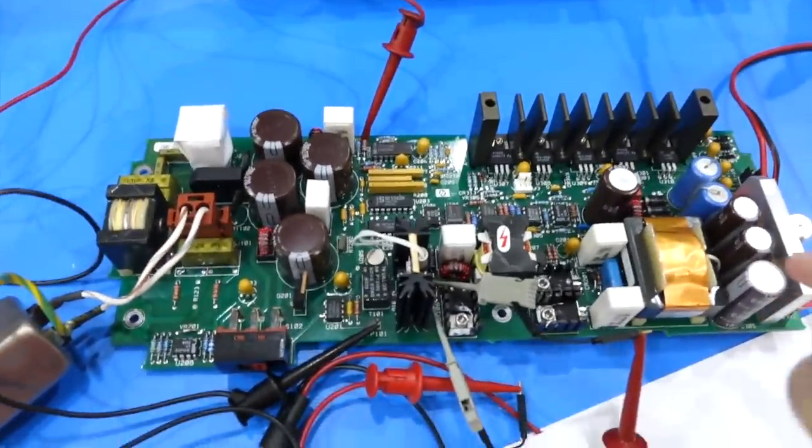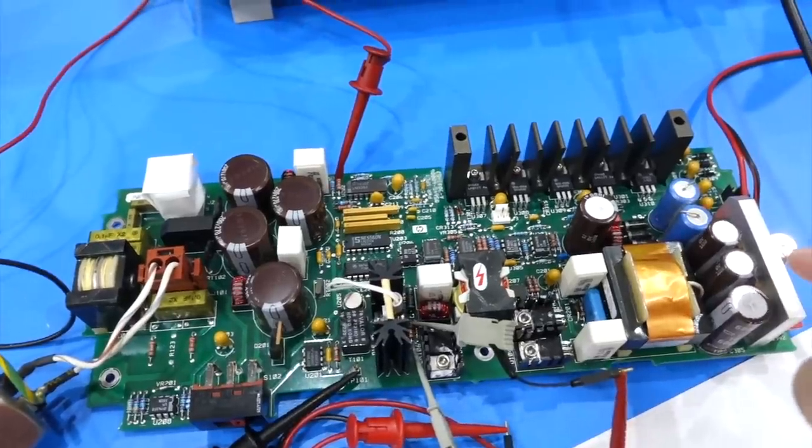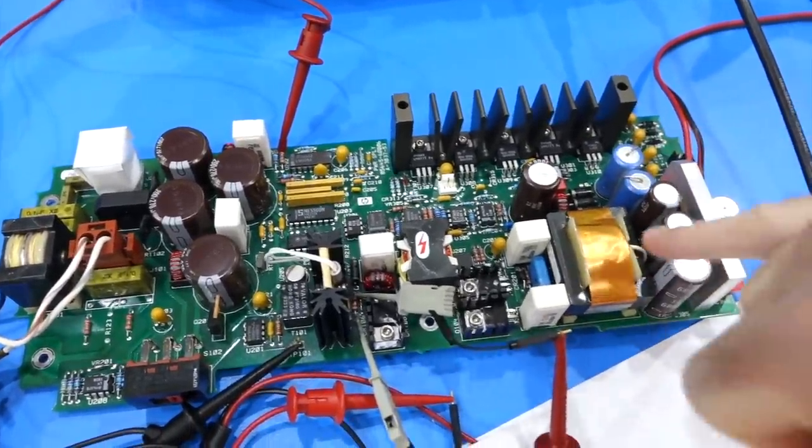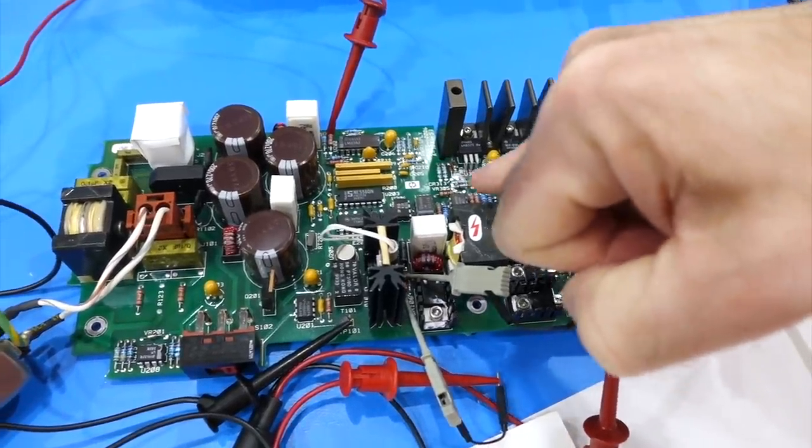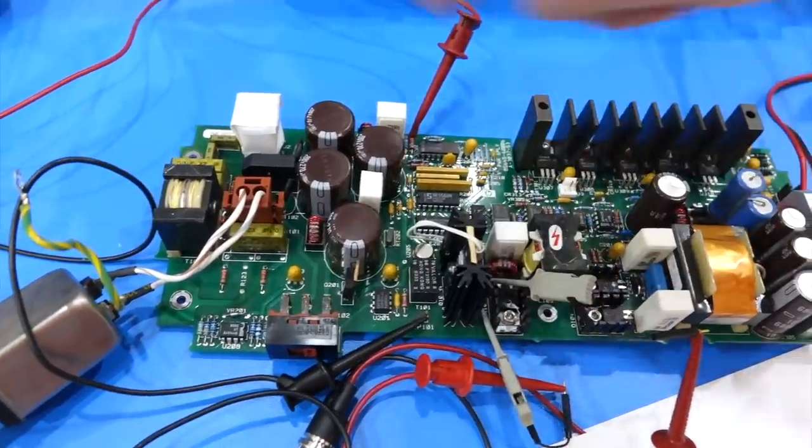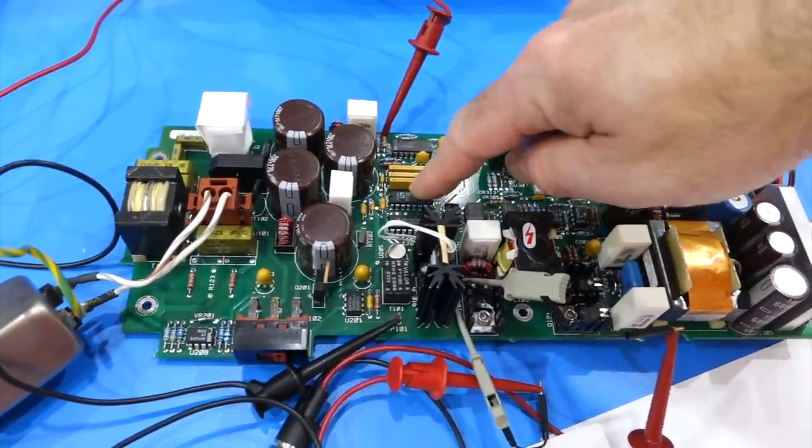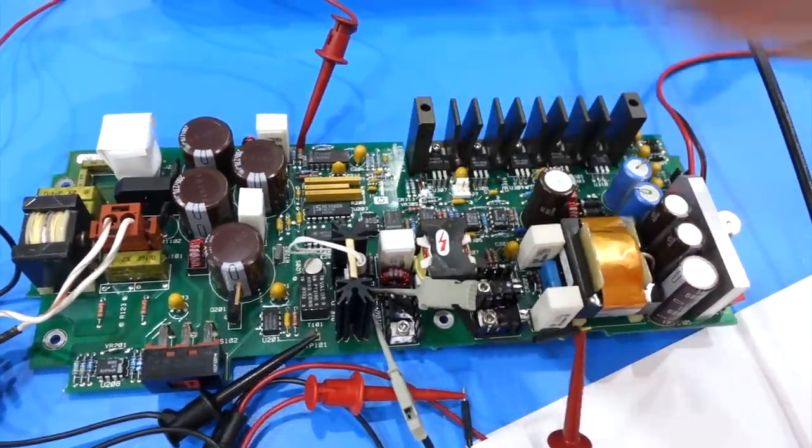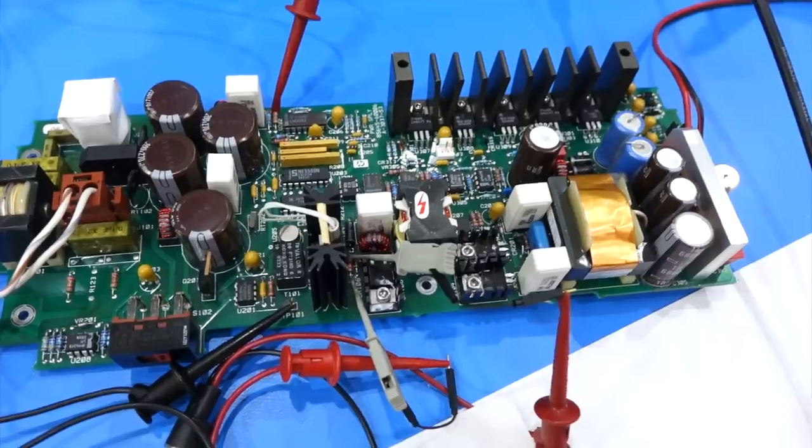And the control loop basically goes from, it takes its reading somewhere here after the second transformer. Then it goes all the way back to those four chips. Then it's an opto-isolator that references it back to the primary voltage and feeds it to here. So I have to reverse engineer all this part, which is a complicated loop, actually.